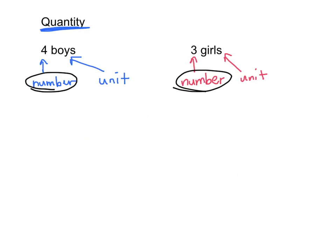So when we're talking about a quantity, we're actually talking here about four boys. In a quantity, there are two parts. There's a number in a quantity, and there is also the unit. The number in four boys is four, and the unit is boys. In three girls, the number is three, and the unit is girls. So what we are counting is the unit, how many is the number.